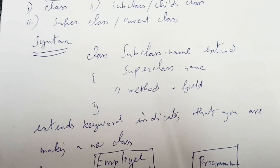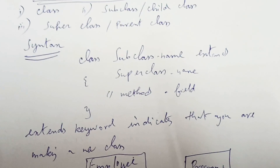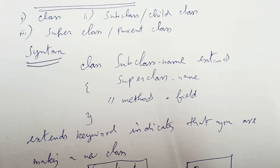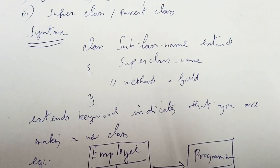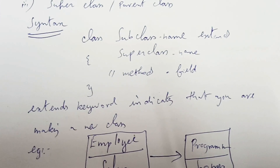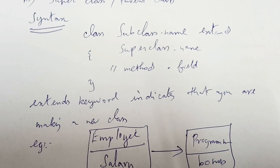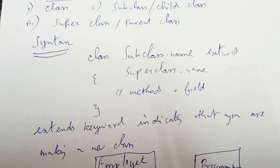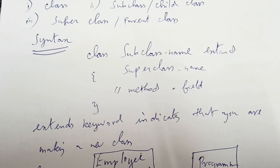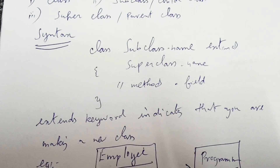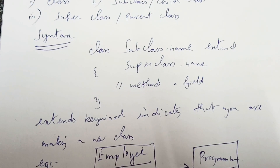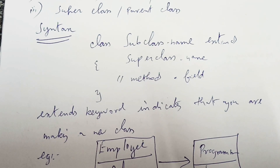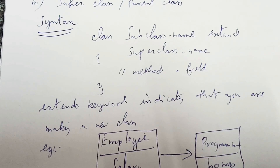This is the syntax for using inheritance. The important keyword here is 'extends'. This keyword indicates that you are making a new class. The syntax is: class SubclassName extends SuperclassName, followed by opening and closing braces. The subclass name is the new class you are creating, and the superclass name is the existing parent class. Within the braces we pack the methods and fields.